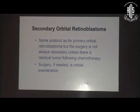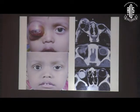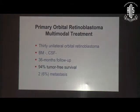In secondary orbital retinoblastoma, we followed the same protocol. On MRI the implant appears black. Once the implant settles, the patient has good cosmesis. This patient did not need any additional surgery — all that was needed was 12 cycles of chemotherapy with radiation sandwiched in between.